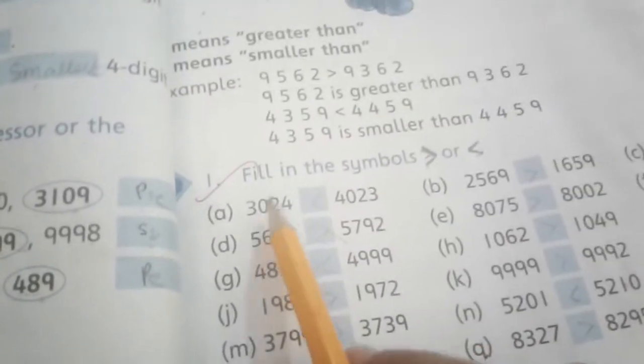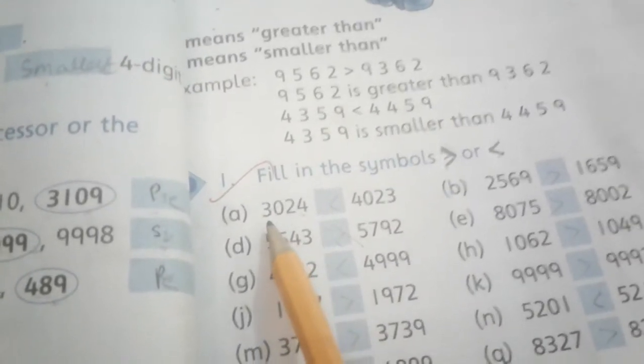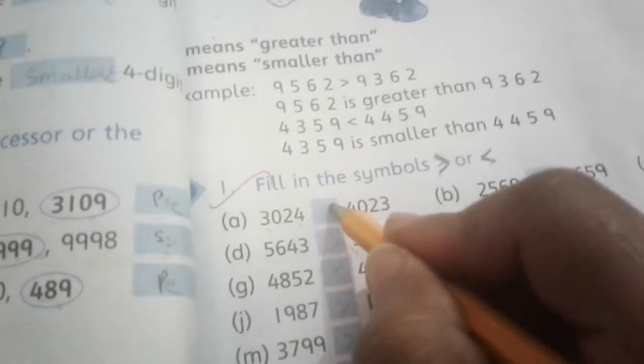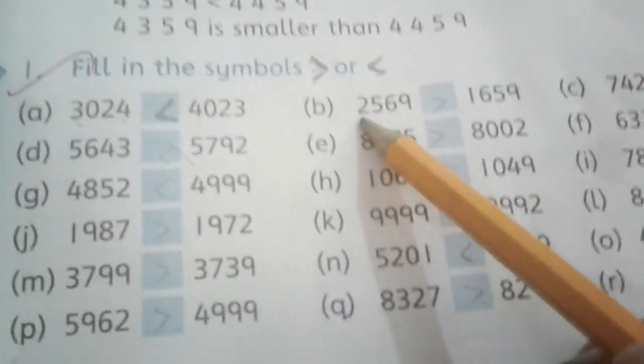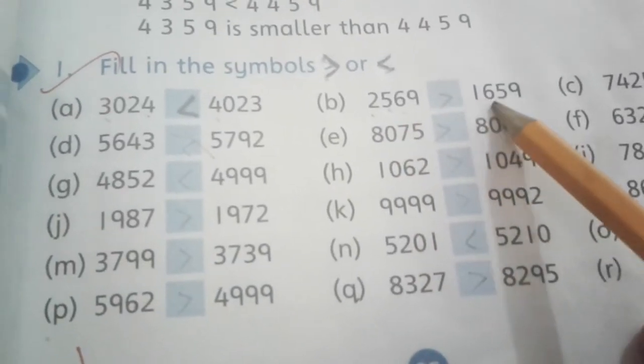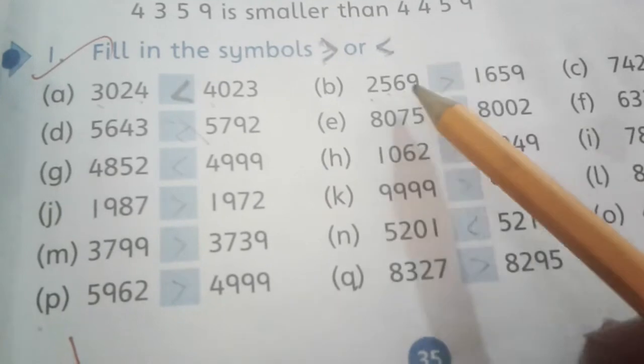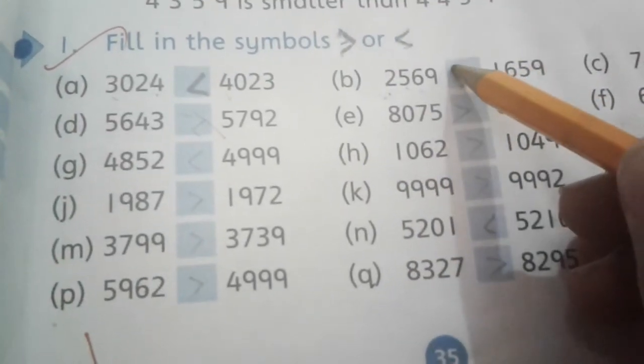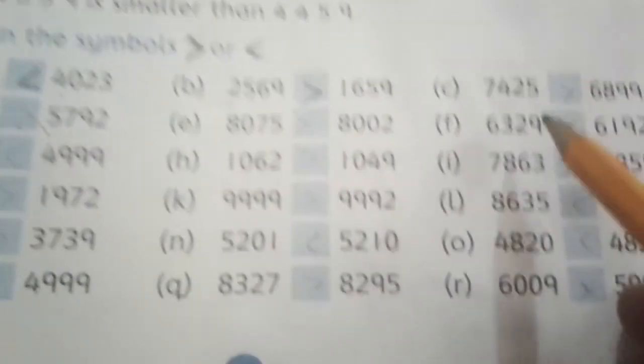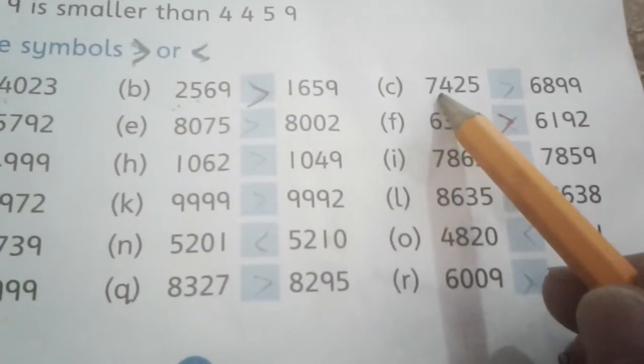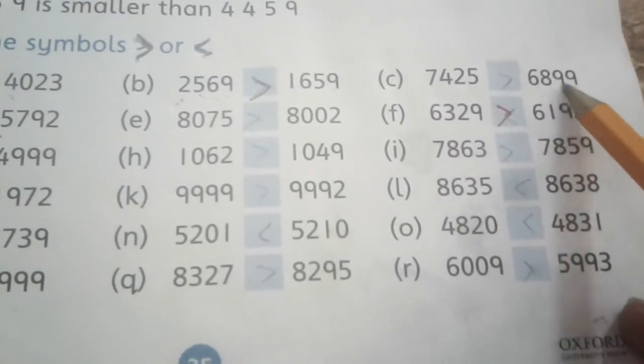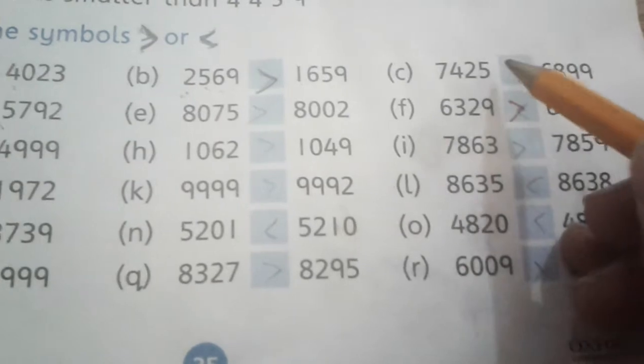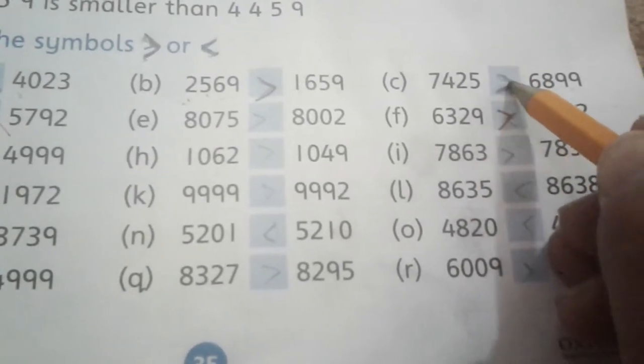Three thousand twenty-four, three thousand twenty-four. Next is two thousand five hundred sixty-nine, one thousand six hundred fifty-nine. Seven thousand four hundred twenty-five - seven thousand is bigger than six thousand, so seven thousand ki taraf symbol goes.